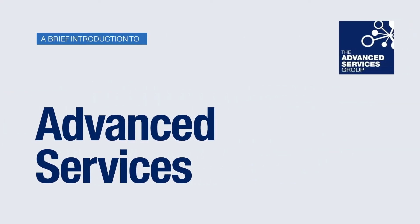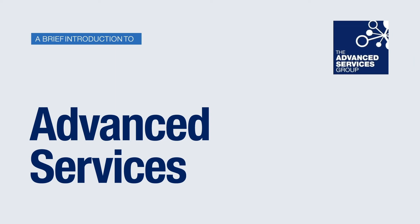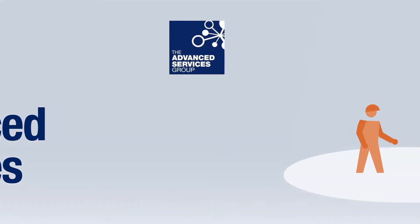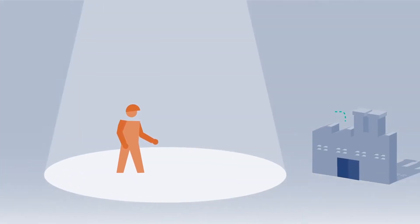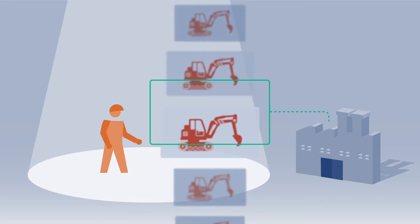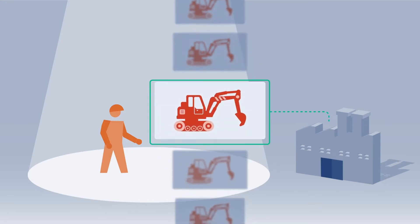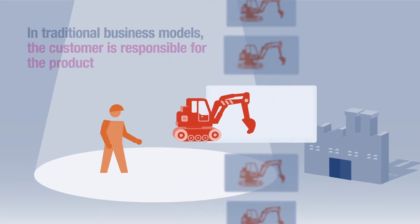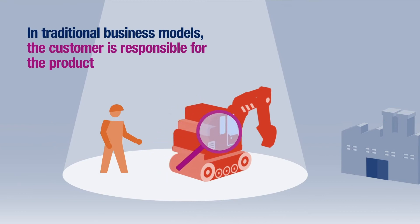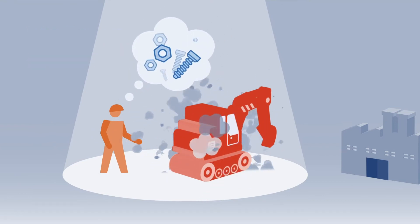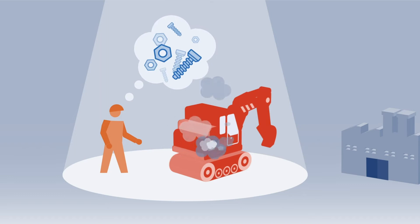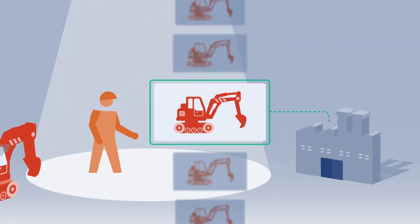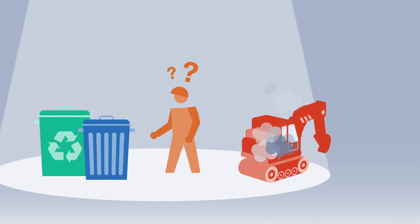A brief introduction to advanced services. In traditional product-based business models, manufacturers produce a range of products that customers can choose from. Upon purchase, it is the customer who is responsible for the product, its performance, and its maintenance and repair. The customer also decides when to replace the product at the end of its life and how to dispose of it.